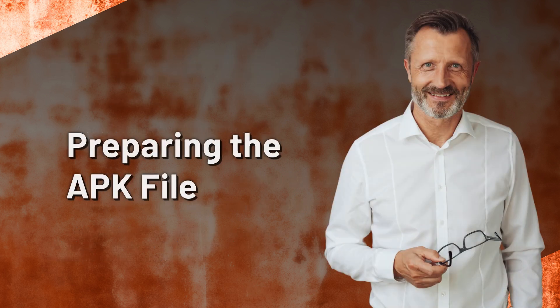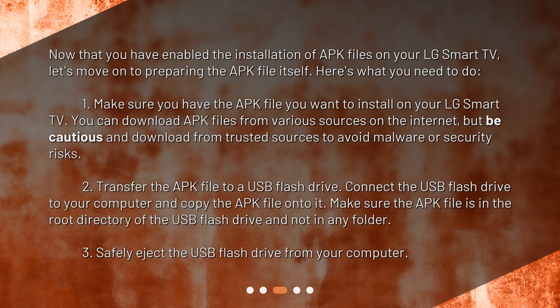Preparing the APK file. Now that you have enabled the installation of APK files on your LG Smart TV, let's move on to preparing the APK file itself. Make sure you have the APK file you want to install. You can download APK files from various sources on the internet, but be cautious and download from trusted sources to avoid malware or security risks. Transfer the APK file to a USB flash drive — connect the USB flash drive to your computer and copy the APK file onto it. Make sure the APK file is in the root directory of the USB flash drive and not in any folder. Safely eject the USB flash drive from your computer.